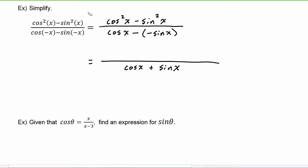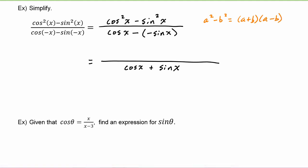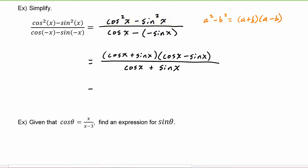Now this numerator — we need to recognize that this is just algebra factoring. If we have a squared minus b squared, we know that factors to (a plus b)(a minus b). Applying that rule to the numerator, we get (cosine of x plus sine of x)(cosine of x minus sine of x). Now we can cancel the cosine of x plus sine of x in the numerator with the cosine of x plus sine of x in the denominator, and we are left with cosine of x minus sine of x.